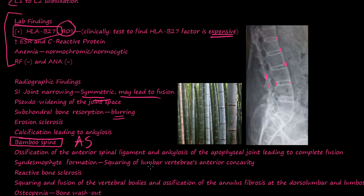Syndesmophyte formation and squaring of the lumbar vertebrae's anterior concavity — instead of the normal concave shape, it just becomes more straight. You can see reactive bone sclerosis and squaring and fusion of the vertebral bodies. There's also osteopenia — some bone washout. That's ankylosing spondylitis. I went over it quite quickly, but you can review and watch it over and over if you need to.